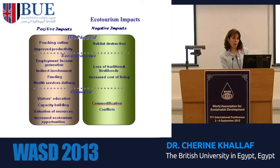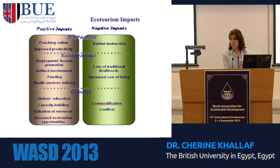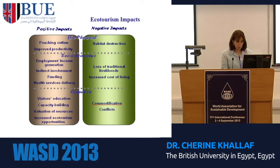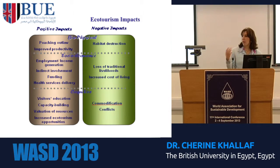This is a representation of the three categories of impacts. For the biophysical category, we had both positive and negative impacts from the case study. Positive impacts included prohibiting hunting and improving productivity, whereas on the negative side there was habitat destruction. From the socioeconomic side, there was employment, income generation, the indirect involvement of different stakeholders, funding opportunities, and health services delivery. When tourism came to this area, it attracted more attention to the local community, and was followed by other services as well.